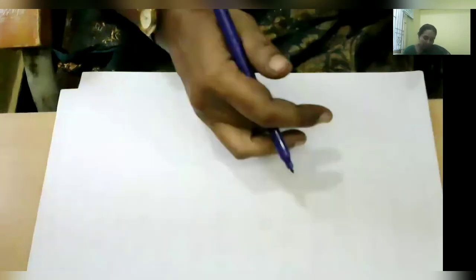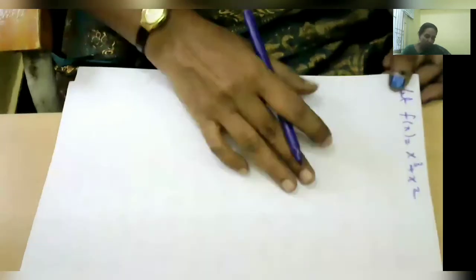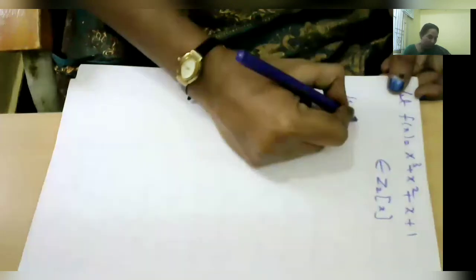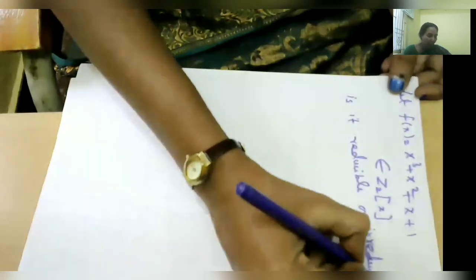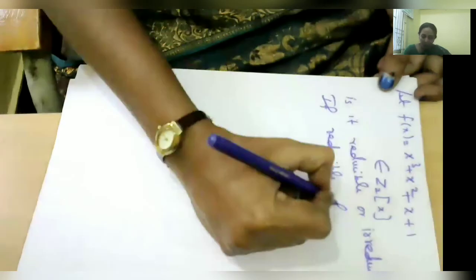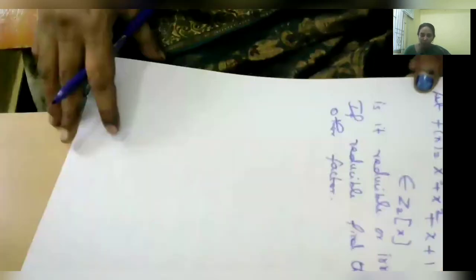So now the next question: let f(x) = x³ + x² + x + 1 belonging to Z₂[x]. Is it reducible or irreducible? If reducible, find the other factor. So the question is: f(x) = x³ + x² + x + 1 belongs to the field Z₂[x]. We are checking whether it is reducible or irreducible, and if it is reducible, find the factor.